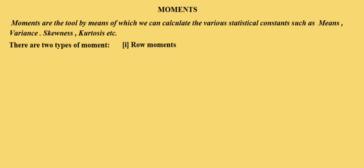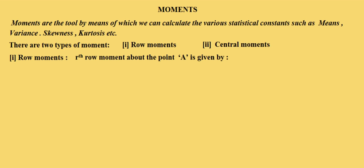One is raw moments and the second is central moments. First we will discuss about raw moments. Raw moments are the moments calculated about any arbitrary point A. The rth raw moment about point A is denoted by mu r prime, and its value is given by mu r prime equals 1 by n summation of f times x minus a, whole power r.